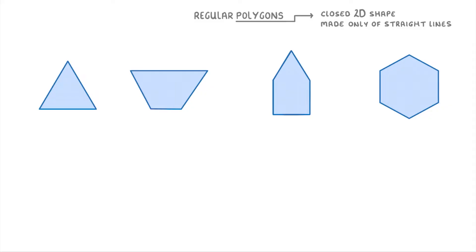In this video we're going to look at what regular polygons are and run through the main examples you need to know. Let's start by breaking down the name regular polygon, which has two parts. The polygon part of the name means a closed 2D shape that's made only of straight lines. So these four shapes would all count as polygons.